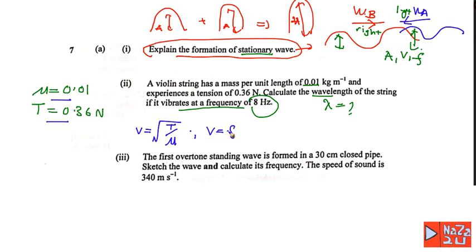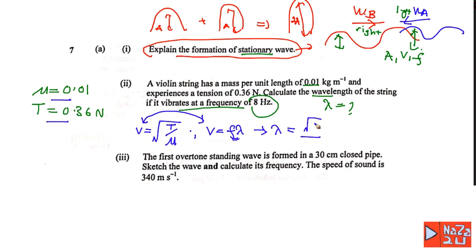We also know v = fλ. Since both expressions equal v, we can write λ = √(T/μ) divided by frequency. The tension T = 0.36, μ = 0.01, and frequency = 8 Hz. Calculating gives λ = 0.75 meters.